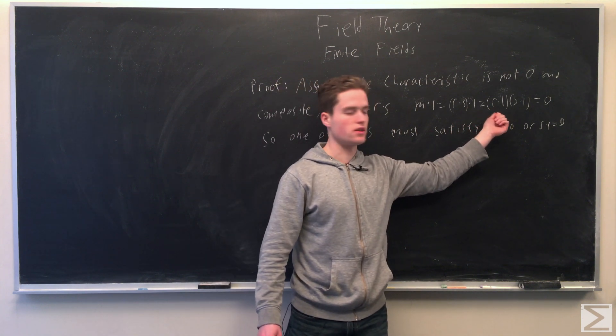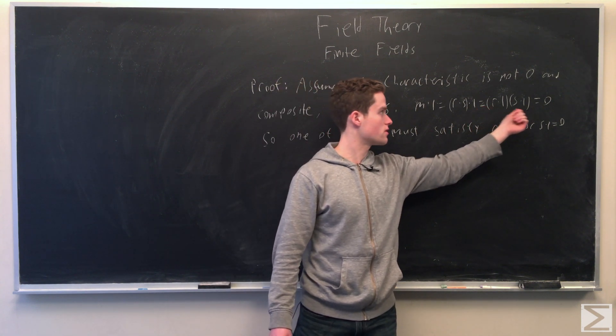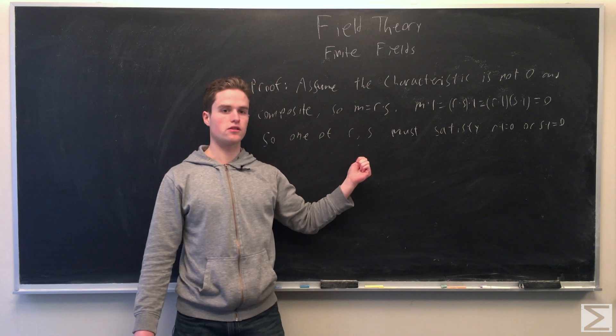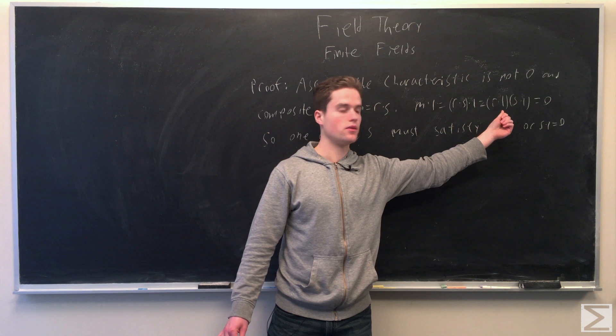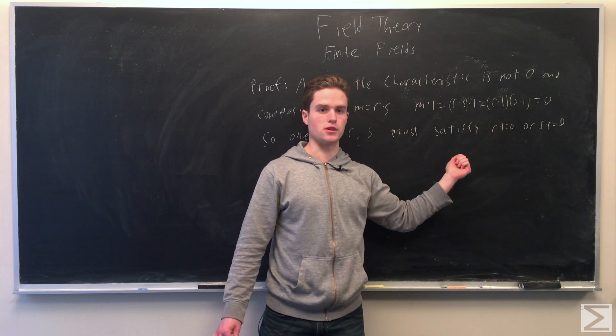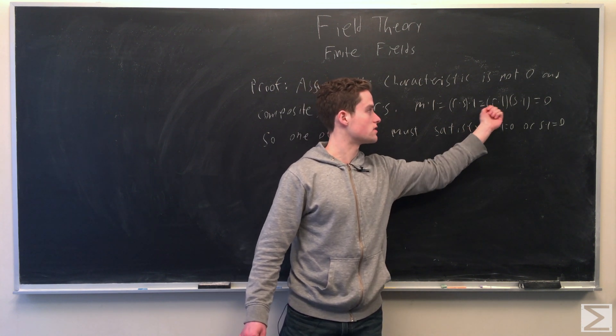So we have r times 1 times s times 1 equals zero. But fields are integral domains. We can take inverses if we assume at least one of these is not zero. But that would imply the other one must be zero. So at least one of these has to equal zero.